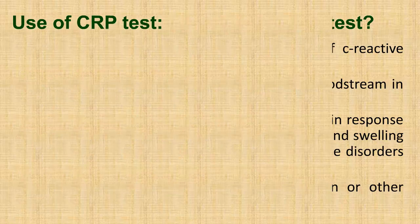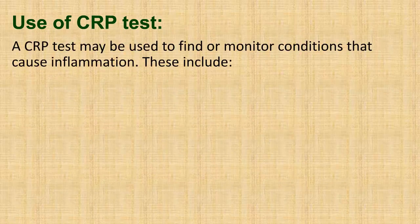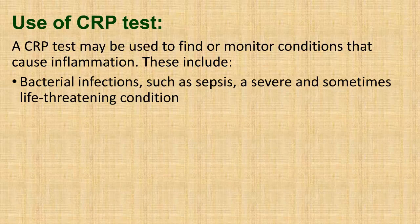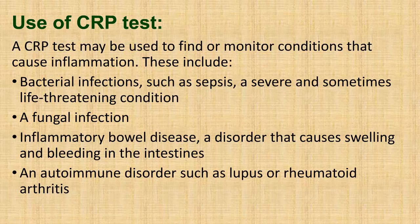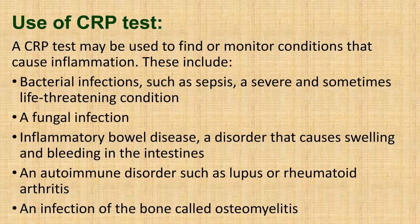Use of CRP test. A CRP test may be used to find or monitor conditions that cause inflammation. These include bacterial infections such as sepsis, a severe and sometimes life-threatening condition; a fungal infection; inflammatory bowel disease, a disorder that causes swelling and bleeding in the intestines; an autoimmune disorder such as lupus or rheumatoid arthritis; and an infection of the bone called osteomyelitis.